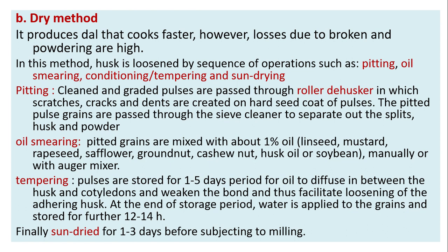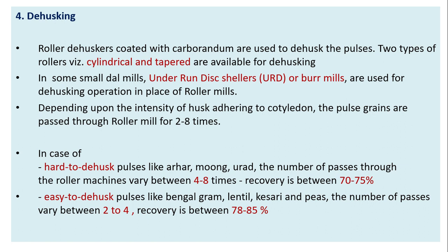Dehusking: roller dehuskers coated with carborundum are used to dehusk the pulses. Two types of rollers are available — cylindrical and tapered. In some small dal mills, under-run disc shellers or boor mills are used for the dehusking operation in place of roller mills. Depending upon the intensity of husk adhering to the cotyledon, pulse grains are passed through the roller mill for two to eight minutes. For hard-to-dehusk pulses like arhar, moong, and urad, the number of passes through the roller machines varies between four to eight times.